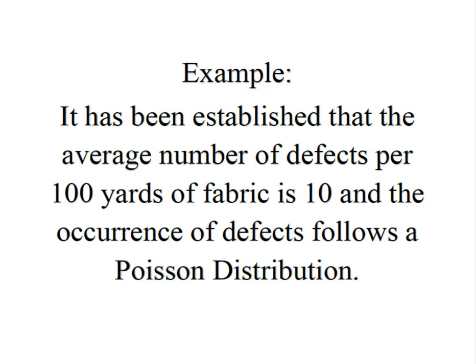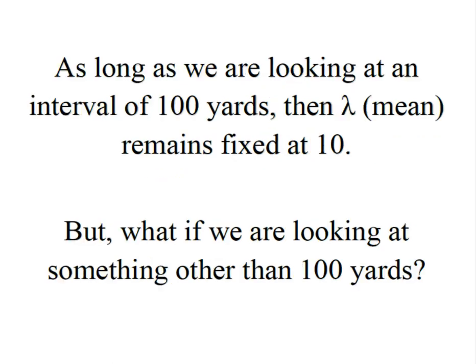It's been established that the average number of defects per 100 yards of fabric is 10 and the occurrence of the defects follows a Poisson distribution. What this means is as long as we're looking at an interval of 100 yards, then that value of the mean remains fixed at 10. So every 100 yards we would expect to see 10 defects. We look at another 100 yards, 10 more defects.